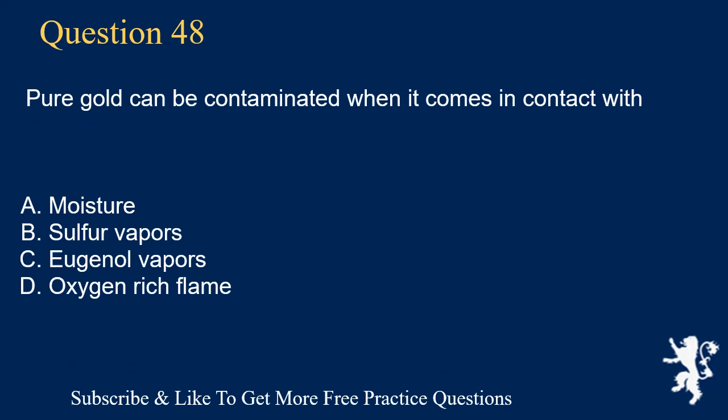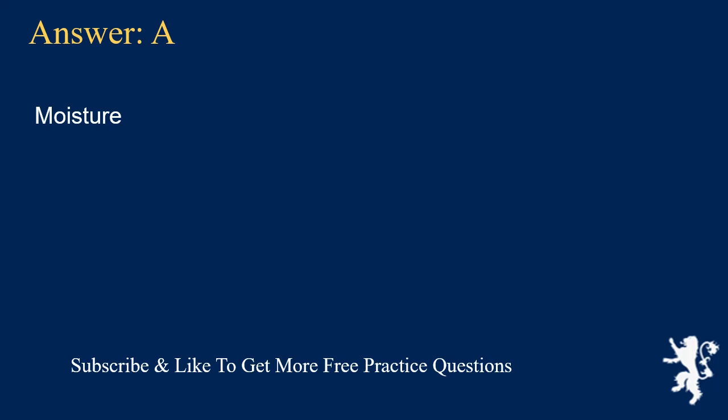Question 48. Pure gold can be contaminated when it comes in contact with: A. Moisture, B. Sulfur vapors, C. Eugenol vapors, D. Oxygen-rich flame. Answer: A. Moisture.